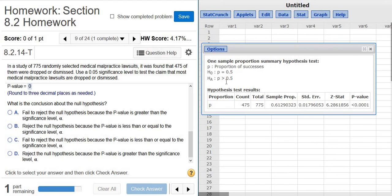So there is sufficient evidence to say that the proportion of lawsuits that are dropped is greater than 50%. In other words, most of them are dropped or dismissed. So it's going to be B or D. It's going to be this one here. Reject the null hypothesis because the P value is less than or equal to the significance level alpha.